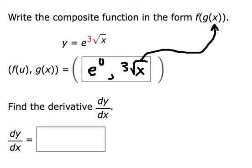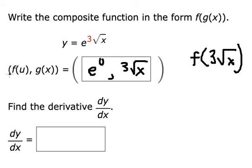going in here, we have f of 3 times the square root of x. But f of u, we have e to the power of u, and this one will change for u and you get this one.